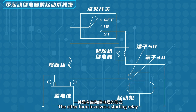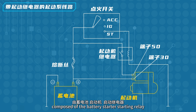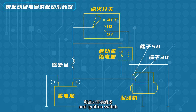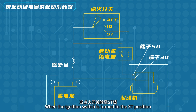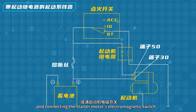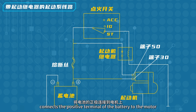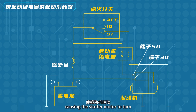The other form involves a starting relay, composed of the battery, starter, starting relay, and ignition switch. When the ignition switch is turned to the ST position, the starting relay coil is energized, closing the contacts of the starting relay and connecting the starter motor's electromagnetic switch. The electromagnetic switch then connects the positive terminal of the battery to the motor in the starter, causing the starter motor to turn and consequently initiating the rotation of the engine.